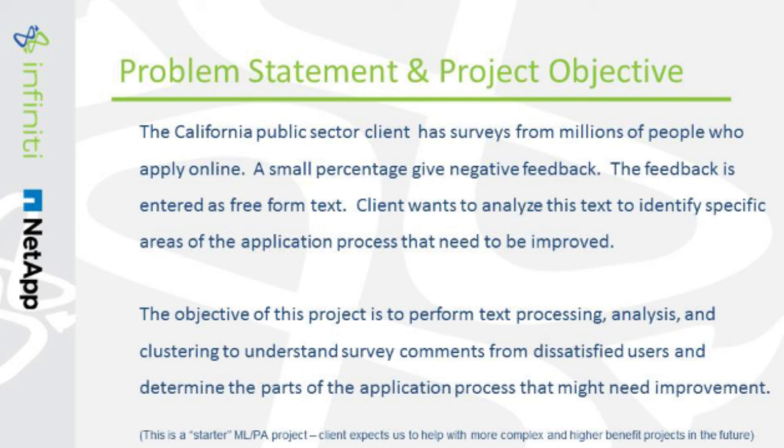The problem statement: we've anonymized this, so we're not talking about the actual client, but they are a California public sector client. They have millions of users who apply online, and at the end of a very long application process, they collect survey information — fairly standard feedback from very positive to very negative, along with a blob of text that people enter. Although they get primarily positive feedback, they do get negative feedback. What they wanted to do was analyze that feedback to figure out how they can improve their application process. Given they've got hundreds of thousands of these records, you're not going to be able to read through them all to spot trends — this is where machine learning comes in.